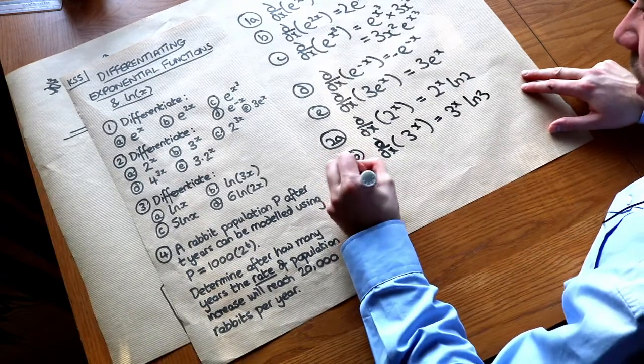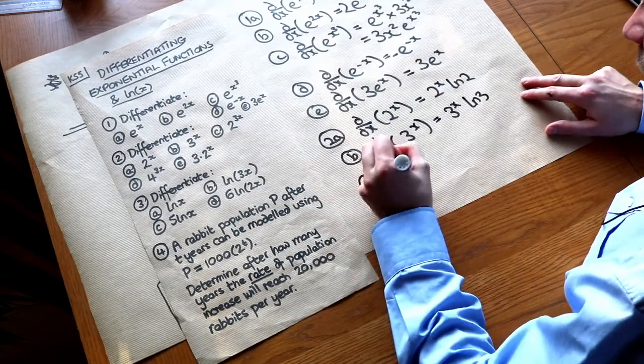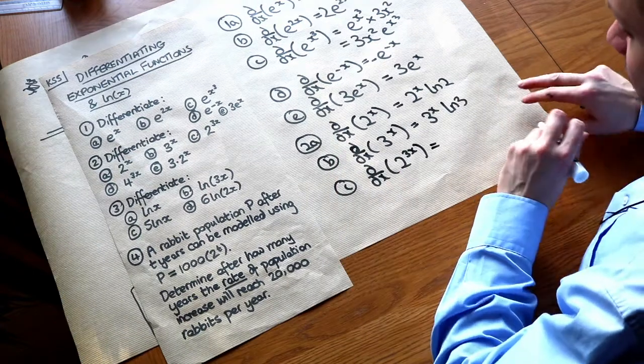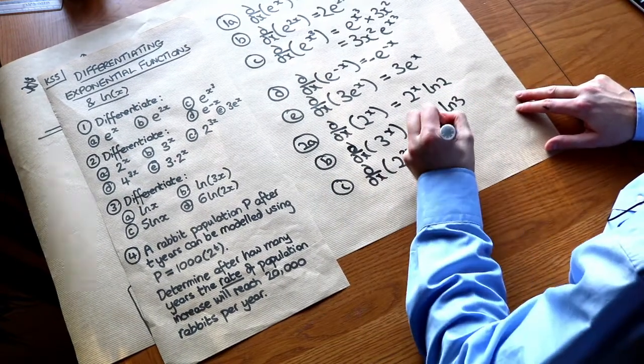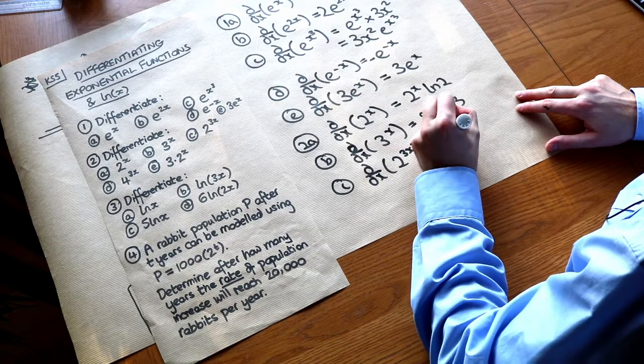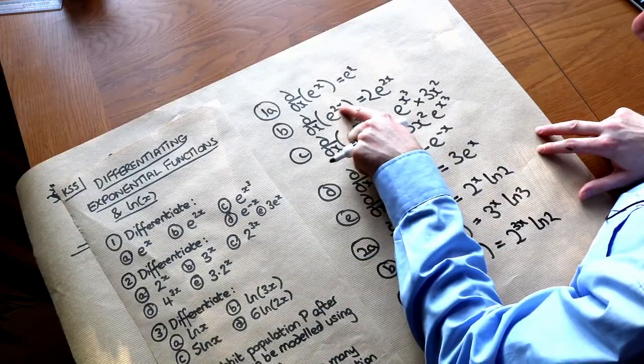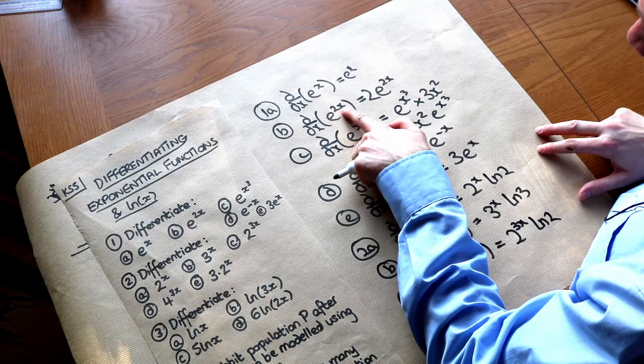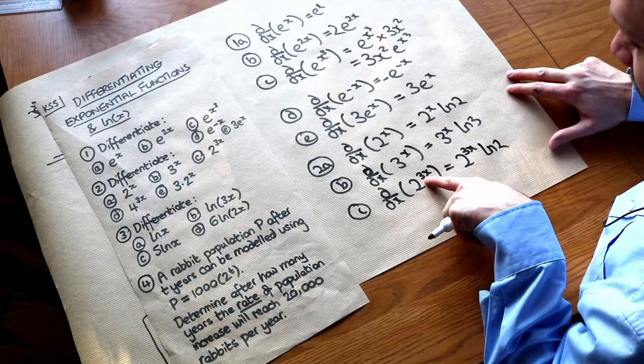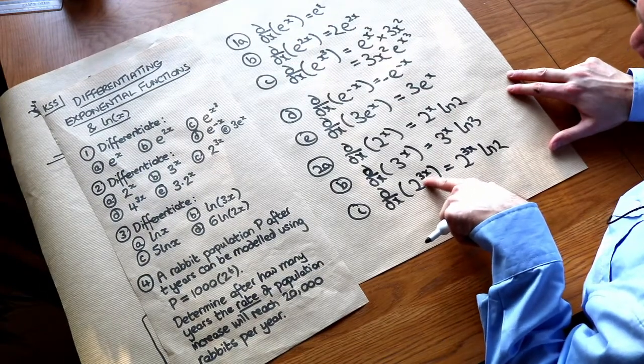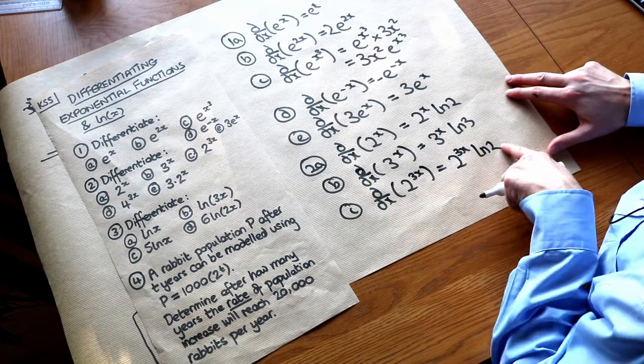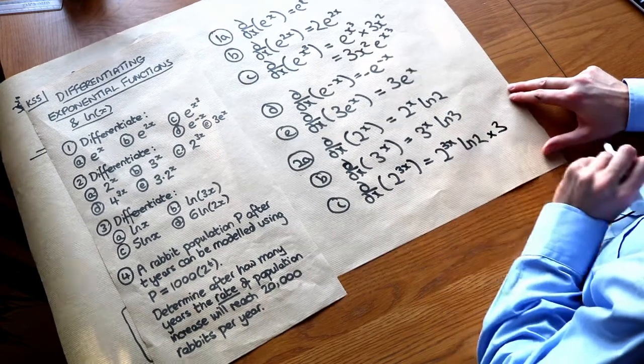Now this one's a bit harder. What about 2 to the 3x? Well what happens here is that we again multiply by ln of the base. So we have 2 to the 3x ln 2. But just with these ones here we multiplied by whatever the power differentiates to, we do the same here. So we've got to multiply by whatever the power differentiates to which is 3. So we get an extra 3 on the end.